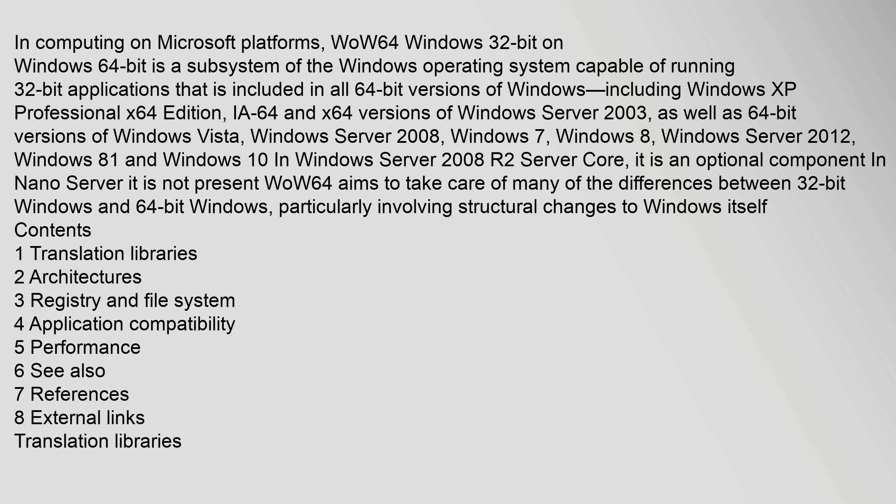In Windows Server 2008 R2 Server Core, WOW64 is an optional component; in Nano Server it is not present. WOW64 aims to take care of many of the differences between 32-bit Windows and 64-bit Windows. Topics covered include translation libraries, architectures, registry and file system, application compatibility, performance, and references.